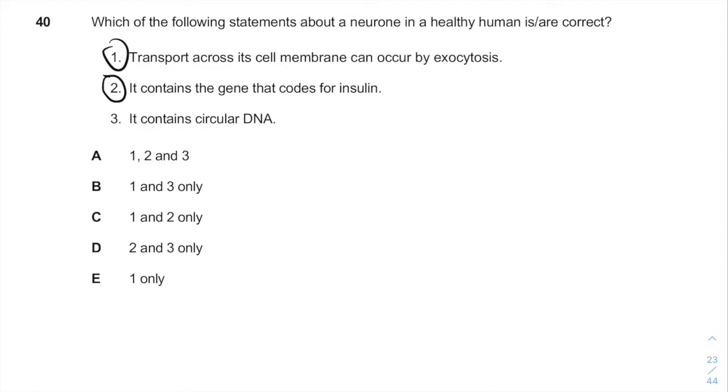So, 2 is also correct. And it contains a circular DNA. It's also correct because it is another trick they love to make. Circular DNA can be found in mitochondria. And mitochondria can be found in eukaryotic cells, in most of eukaryotic cells.